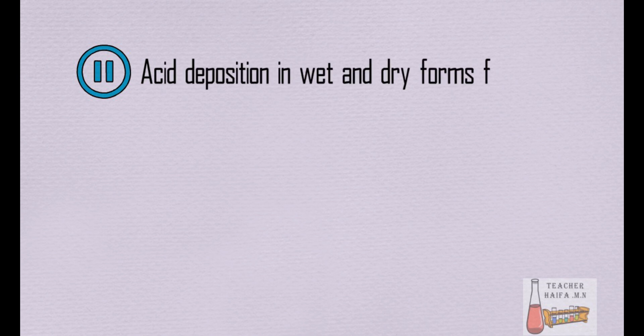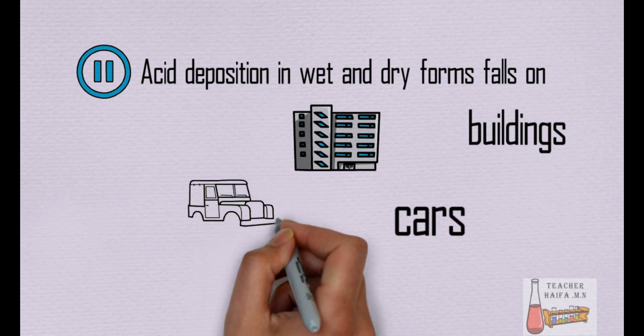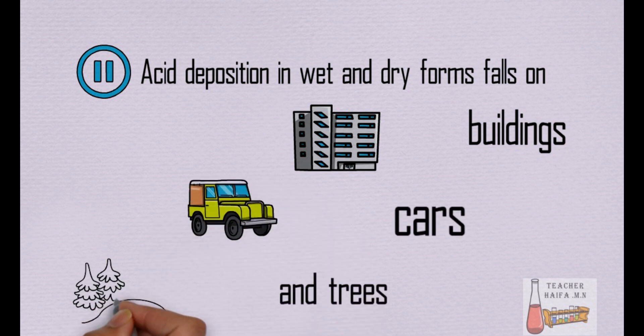Acid deposition in wet and dry forms falls on buildings, cars, and trees and can make lakes acidic.